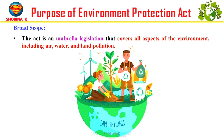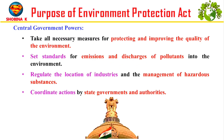Next: central government powers. This act grants extensive powers to the central government. EPA grants authority to the central government to protect and improve the environment, set standards, regulate industries, and coordinate state actions.